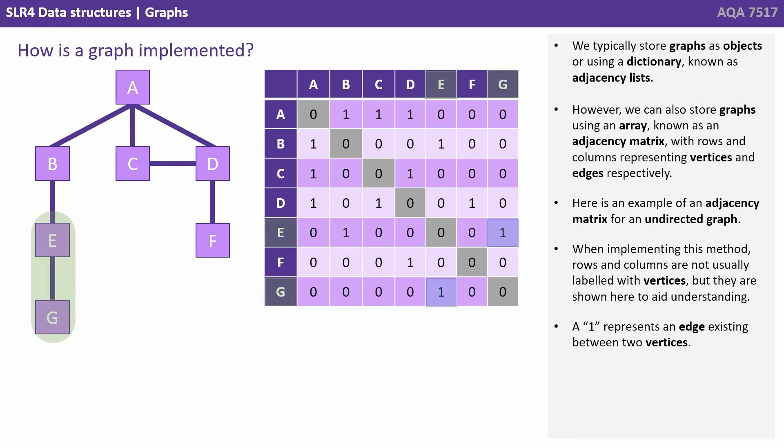When implementing this method, rows and columns are not usually labelled with vertices, but they are shown here to aid understanding. A 1 represents an edge existing between two vertices.